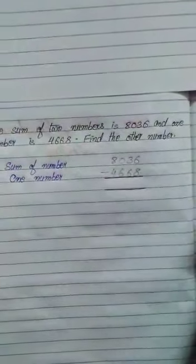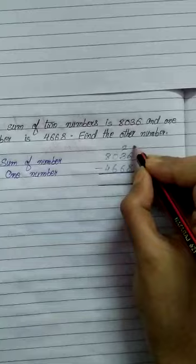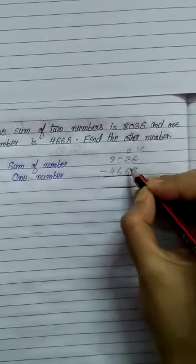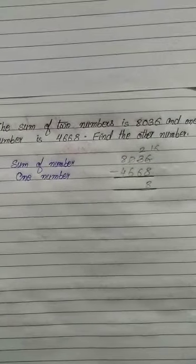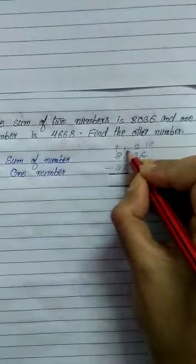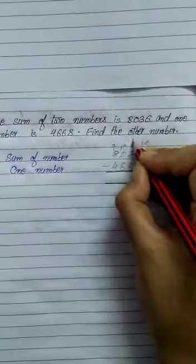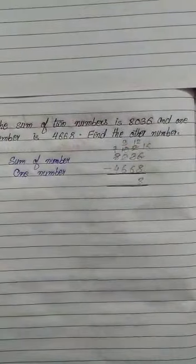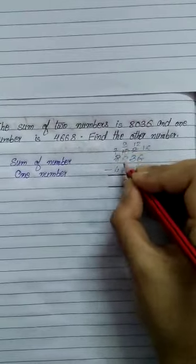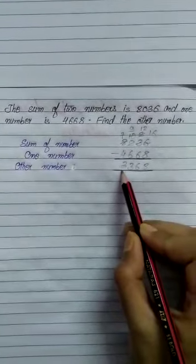Now subtract. 6 minus 8 is not possible, so we borrow from 3. This 3 becomes 2 and 6 becomes 16. 16 minus 8 is 8. Now 2 minus 6 is not possible, so we borrow from this — here is 0, so we borrow from 8. 8 becomes 7, this 0 becomes 10, then this 10 gives 1 to this 2, so this 2 becomes 12 and this 10 becomes 9. 12 minus 6 is 6. 9 minus 6 is 3. And 7 minus 4 is 3. Therefore, the other number equals 3,368.